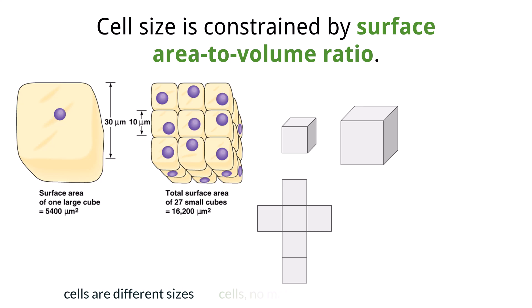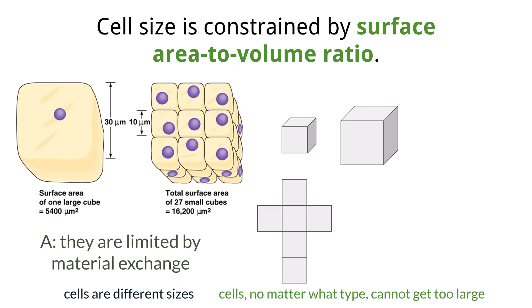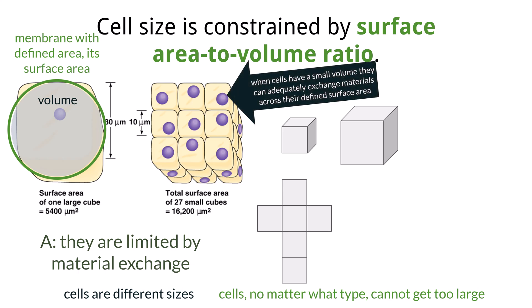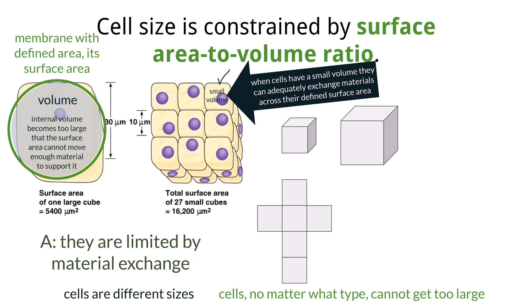The cells in our body are different sizes which help them fit their role, but there is a limit to just how large a cell can be. This limit is true even for single-celled organisms, as we don't really see individual cells that are 5 feet tall. Why can't cells generally grow to be larger than what we can see under a microscope? The problem that cells have with growing is one of material exchange. A cell is wrapped up in a membrane that has a defined area called the surface area, and all of the space inside the cell within the cytoplasm makes up the volume. When the cell is a normal, smaller size, the amount of materials it needs to support the machinery within the cytoplasm can be exchanged across the surface area of the membrane.